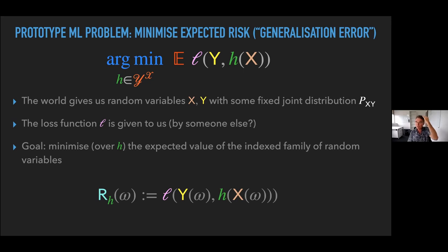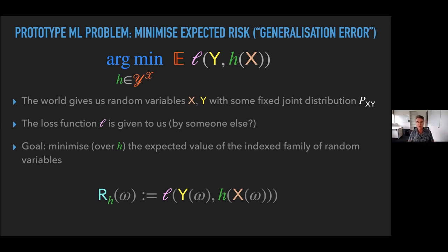The argument minimizes the expected value of the loss between your labels and your predictions of the labels. X is your features, H is your hypothesis, Y is your target, L measures the difference — and you want to make that small on average. The world gives us the random variables, the loss function is somehow magically given to us, and the goal is to minimize that expected value.